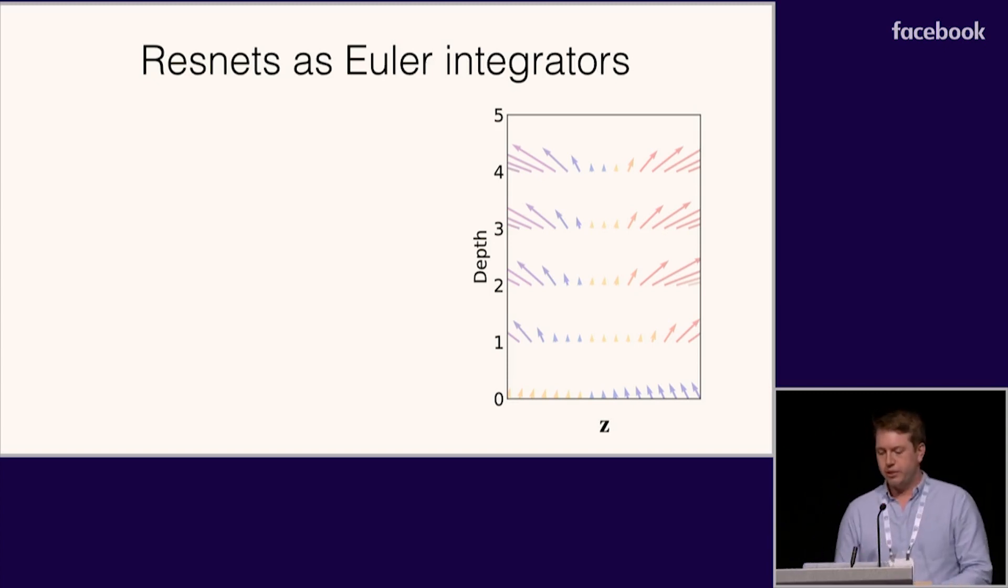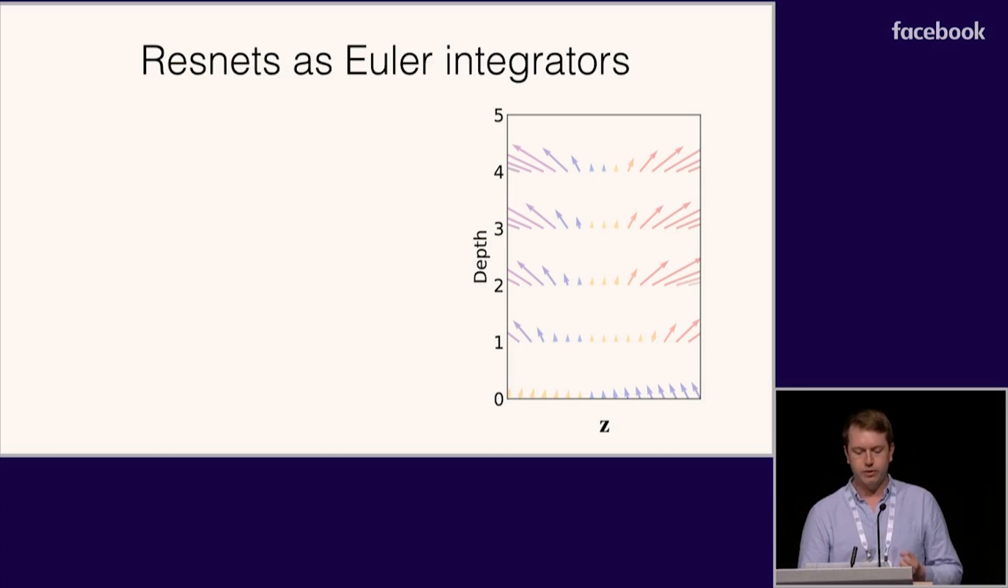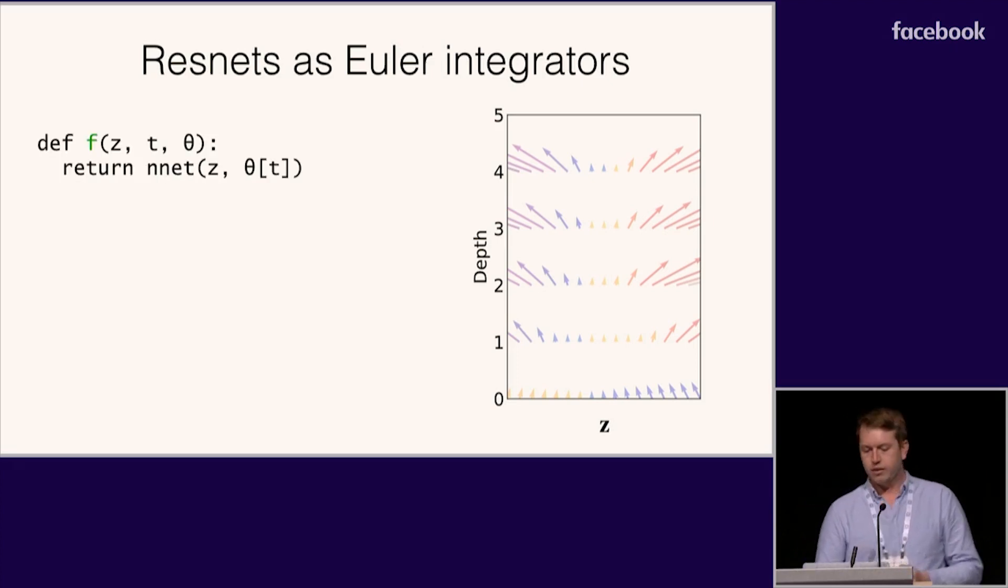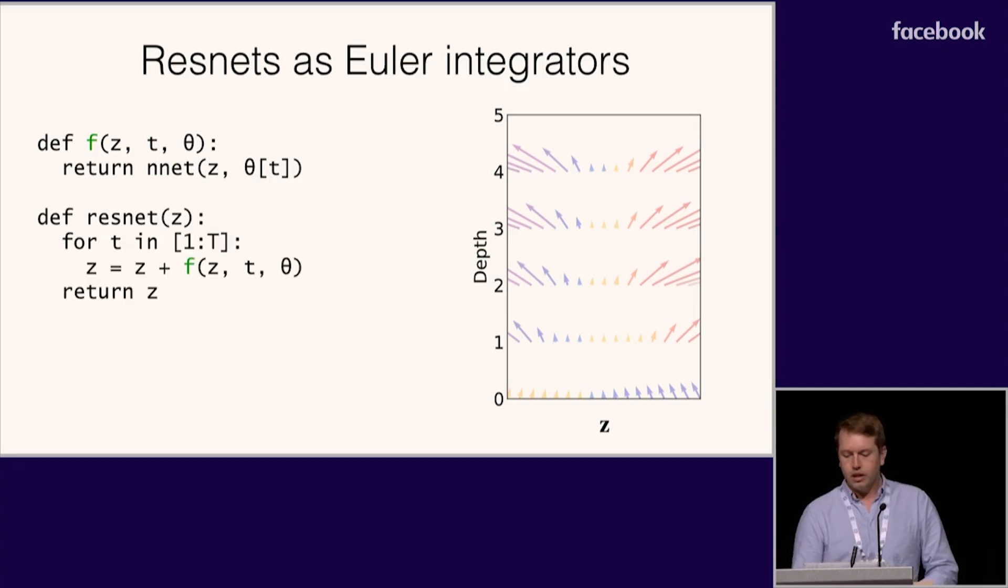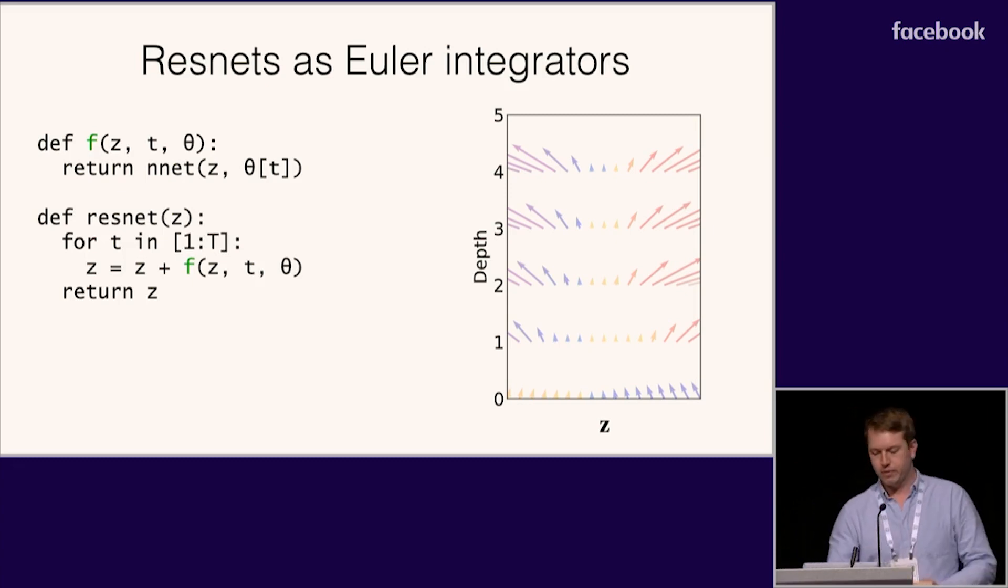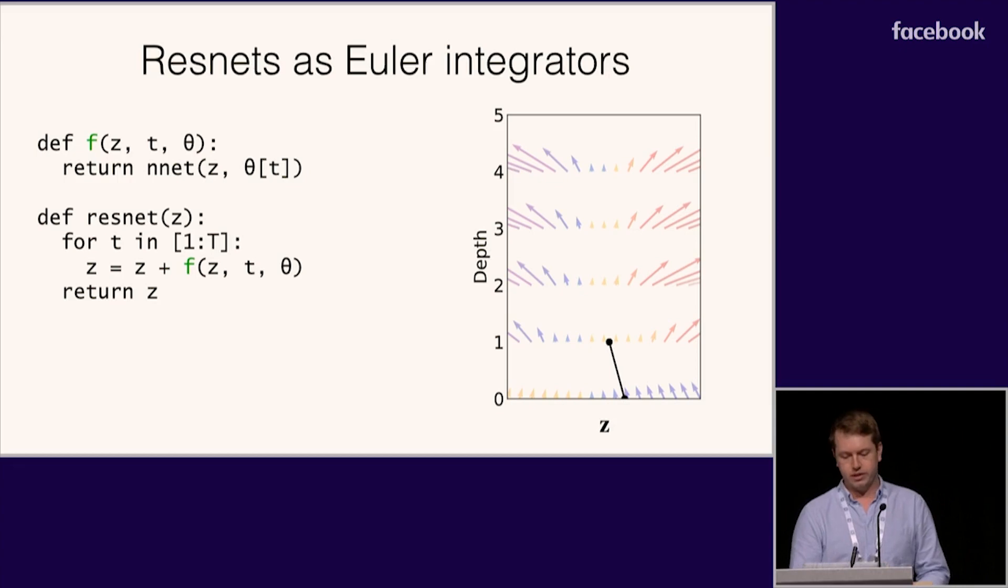Many people have noticed that there's a close connection between residual networks and Euler integrators. Let's look at the code for a ResNet. First, you need to define a ResNet block, which is usually some small neural network. This defines the updates to the hidden units at every layer. Then, to build the rest of the ResNet, you simply compute the update at every layer and add it to the current hiddens. This looks just like Euler integration. On the right, we can watch this algorithm being executed one layer at a time.